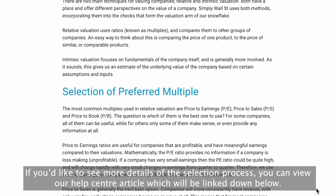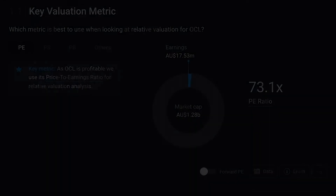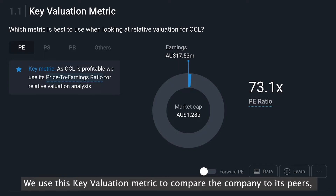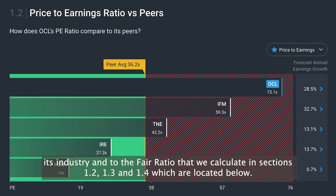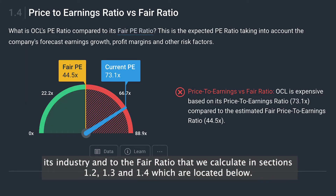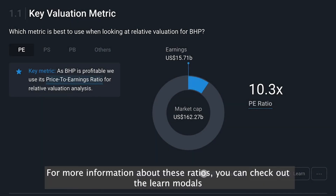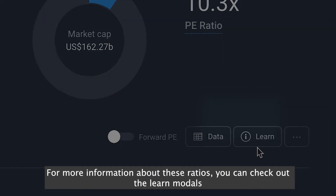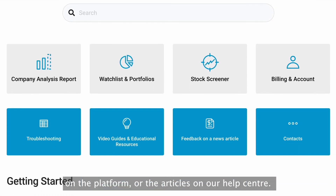We use this key valuation metric to compare the company to its peers, its industry, and to the fair ratio that we calculate in sections 1.2, 1.3, and 1.4, which are located below. For more information about these ratios, you can check out the learn models on the platform or the articles on our help center.